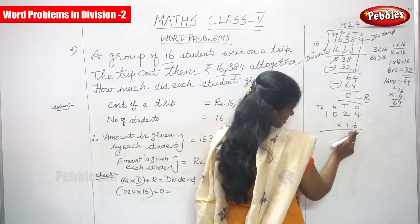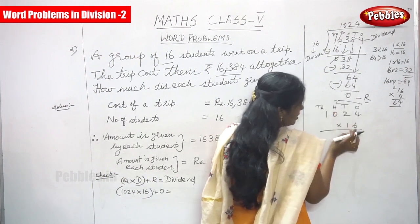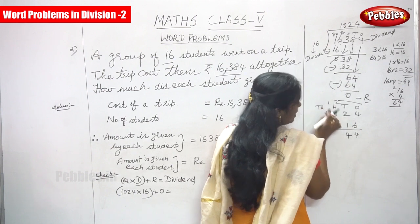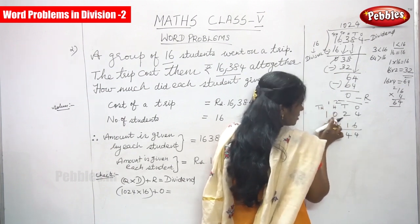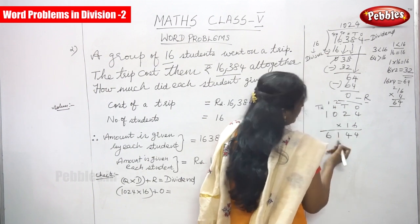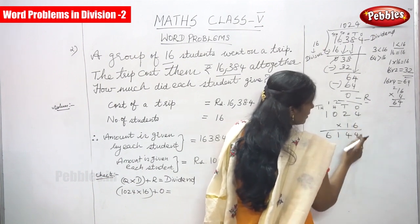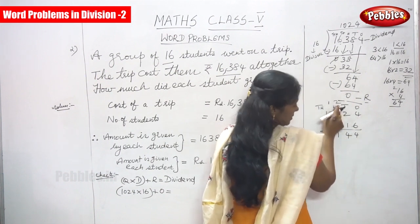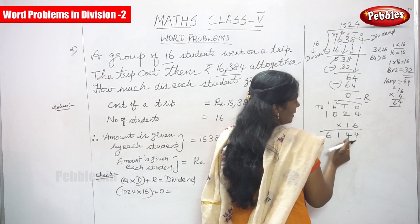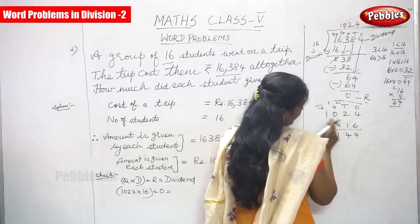First, multiply by 6: 6 fours are 24, write 4 and carry over 2 to the 10s place. 6 twos are 12, plus 2 is 14, write 4 and carry over 1 to the 100s place. 6 into 0 is 0, plus 1 is 1. Then 6 ones are 6. Next, multiply by 1 — but first put 0 in the 1s place. 1 four is 4, 1 two is 2, 1 zero is 0, 1 one is 1.